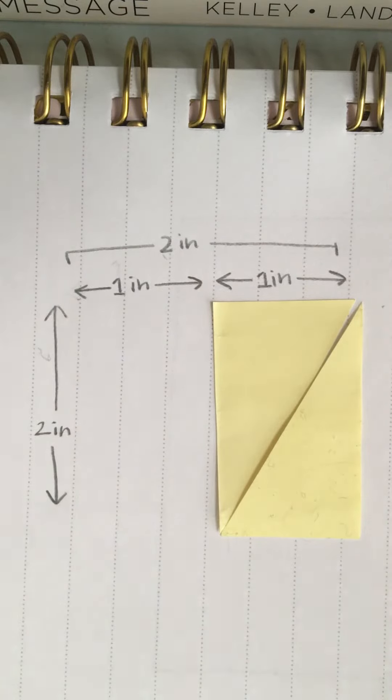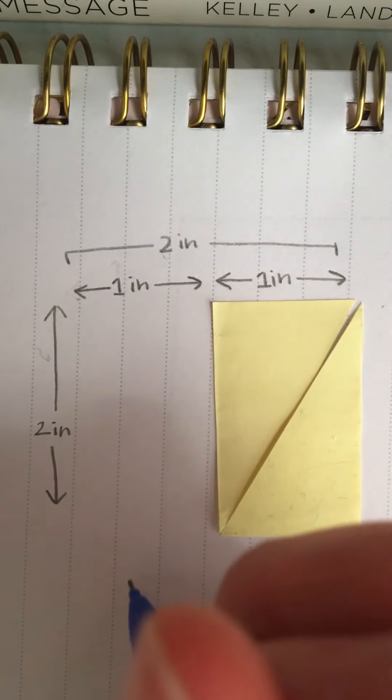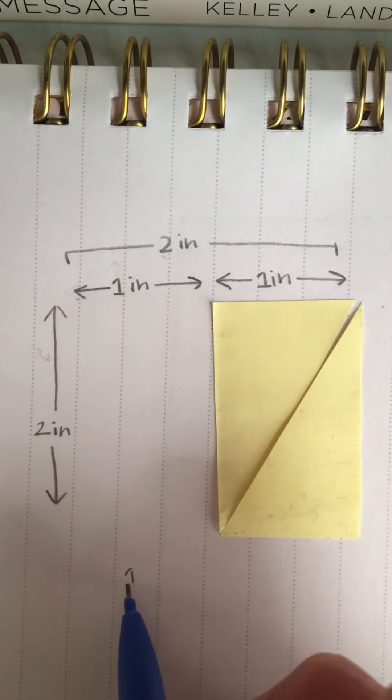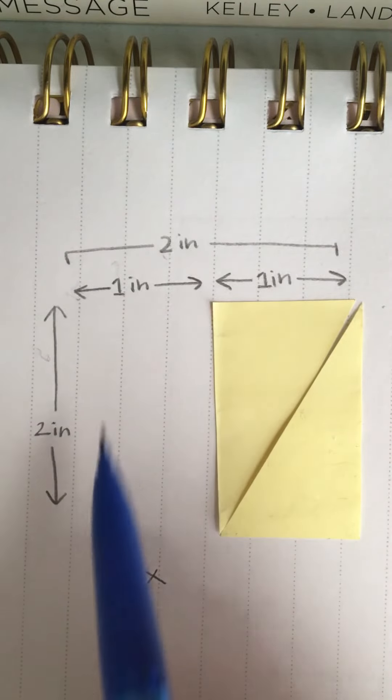So one inch, and I know that my height is two inches. So that makes this pretty easy. I can just say one times my height, which is two, equals two.